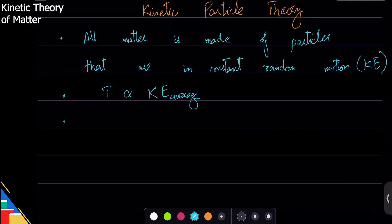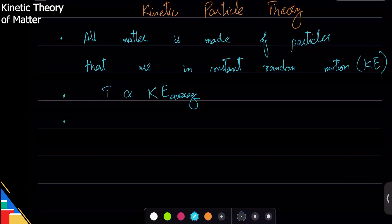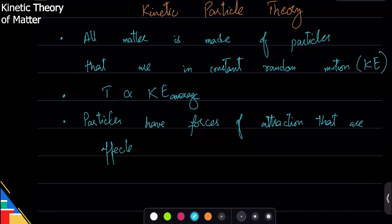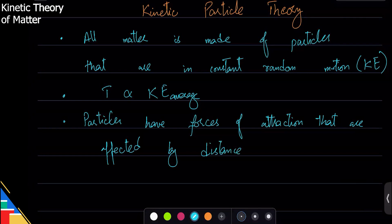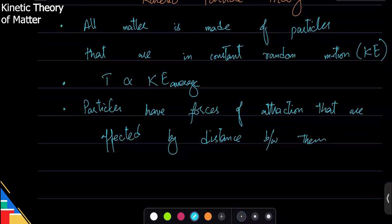The third idea is that there are forces of attraction between particles. These forces are affected by the distance between them, and this is the fundamental difference among the three states of matter. So: one, particles are constantly moving; two, kinetic energy tells us how fast or slow they move, which relates to temperature; and three, particles have attraction for each other that changes based on how far or close they are.